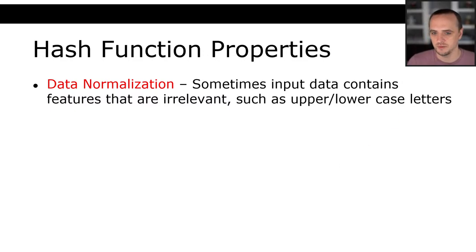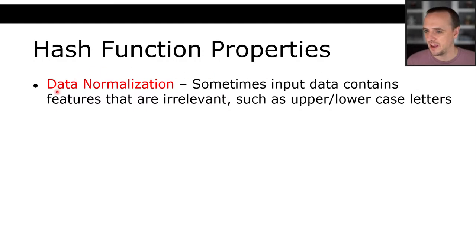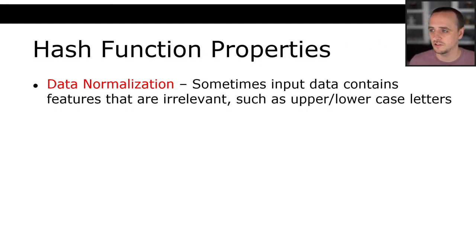Data normalization: sometimes input data contains features that are kind of irrelevant, such as upper and lowercase letters. English capitalization is absolutely unnecessary in some contexts. For example, if I were hashing a sentence I wouldn't care about capitalization, but for a password I would — I want to distinguish upper and lowercase. Sometimes we want to hash away those features, and sometimes we want to keep them.